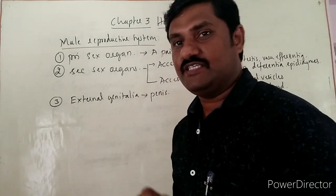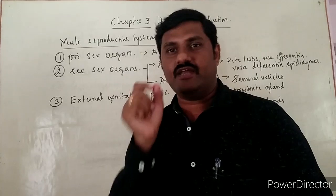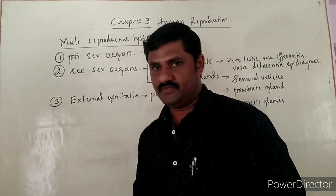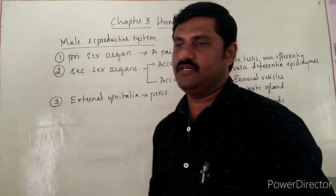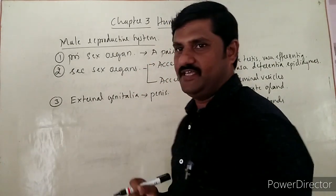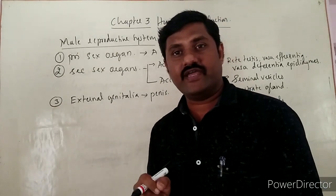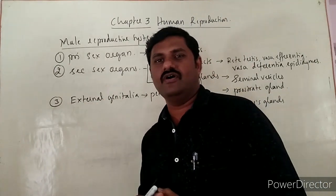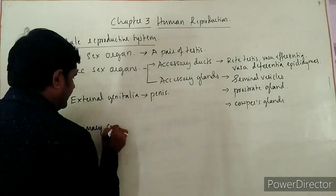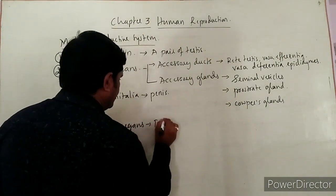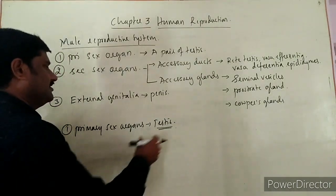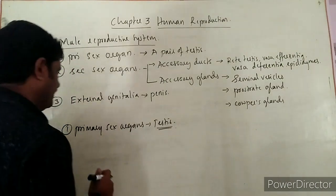Let us start with the primary sex organ, that is the testes. The structure of testes and where they are located are very important points to note. Let us draw the diagram: there are one testes and another testes. This pair of testes lies inside a sac-like structure called scrotal sacs. One is a little lower and another is a little higher — there is an imbalance.